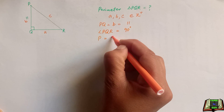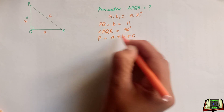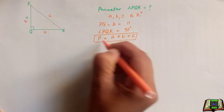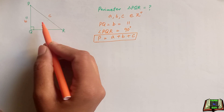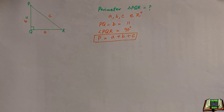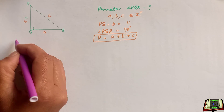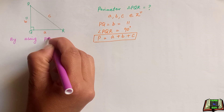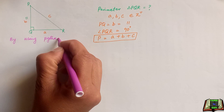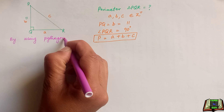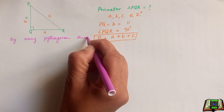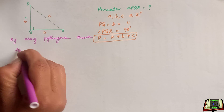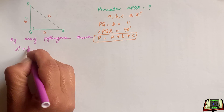Then we can find out the perimeter which is the summation of all three sides. So basically we have to find out the two sides A and C, and then we can find out the perimeter. We are going to use the Pythagorean theorem: A squared plus B squared is equal to C squared.